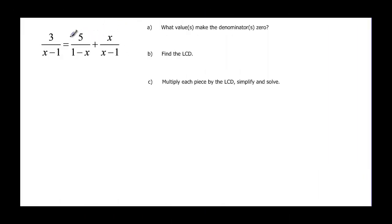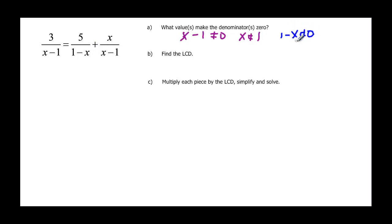In this next example, we look at our denominators to find values that make them zero. We have x minus one, which can't equal zero, so x can't be positive one. Then we have this different-looking factor: one minus x can't equal zero. Bringing the x to the other side, we find one cannot equal x — that's the exact same domain restriction as before. So these are very similarly related.